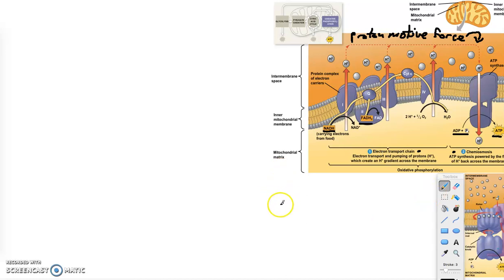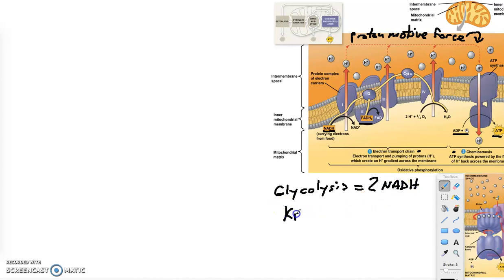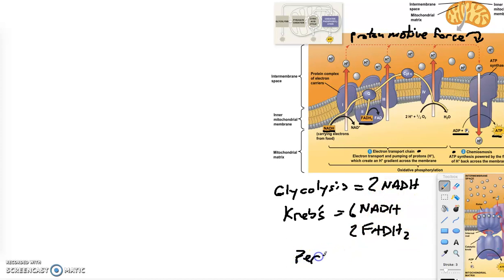Let's talk about where these high energy electron carriers are coming from. Glycolysis gives us two NADH, and then the Krebs cycle gives us six NADH and two FADH2 - that's total per glucose molecule.